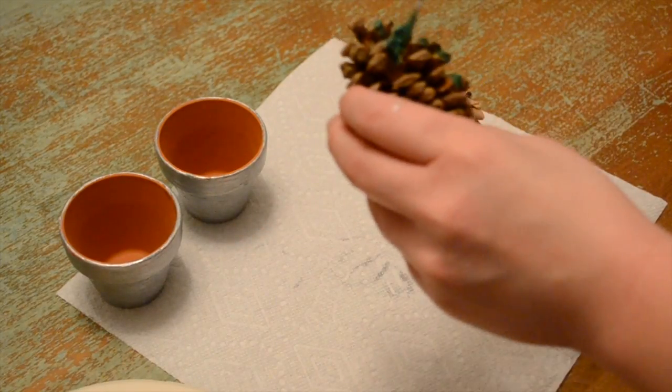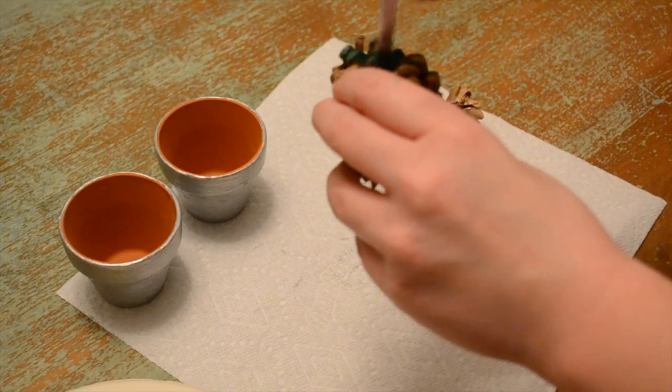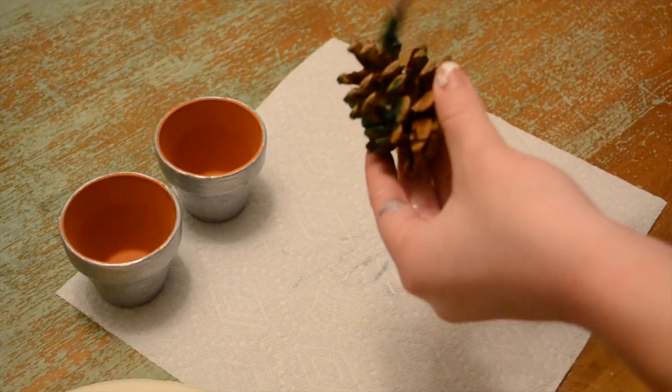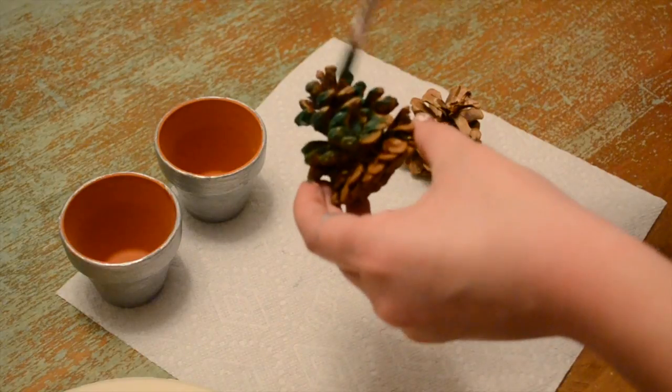And while the pots are drying, you are going to take your pinecones and start applying green acrylic paint to them. Make sure you cover every part of the pinecone that will be seen. And continue this until both of them are fully covered.